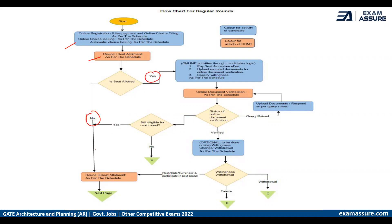If you are not allotted a seat, you can proceed to round two and the same process continues. If you are allotted a seat in the first round, you have to accept the seat, pay the fees, upload required documents for verification, and then specify your willingness or withdrawal.